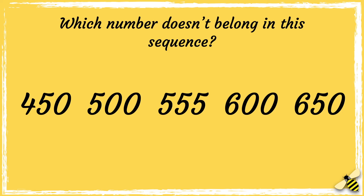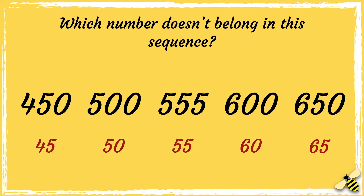Let's see how you got on. What can you remember about counting in 50s? It's similar to the 5 times table, but it's 10 times greater, which means every number should end in 0. Which number doesn't follow this rule? The number 555 ends in 5. So it is a multiple of 5, but it doesn't end in 0, so it's not a multiple of 50. It should be 550.